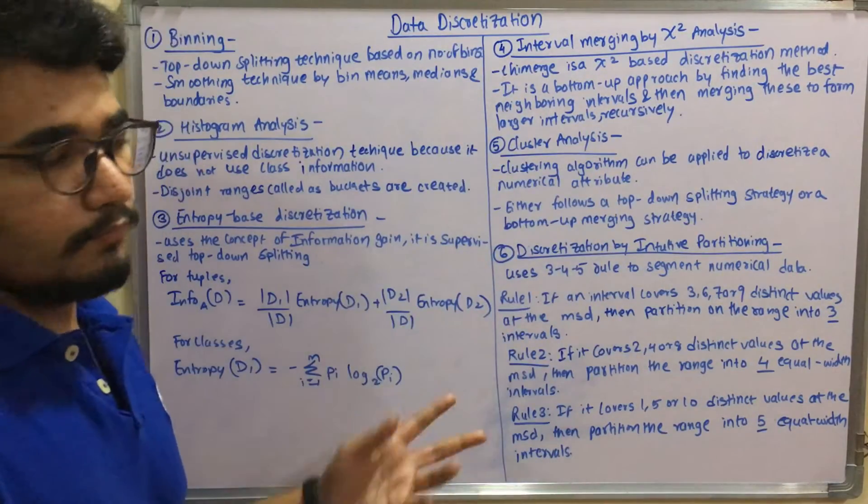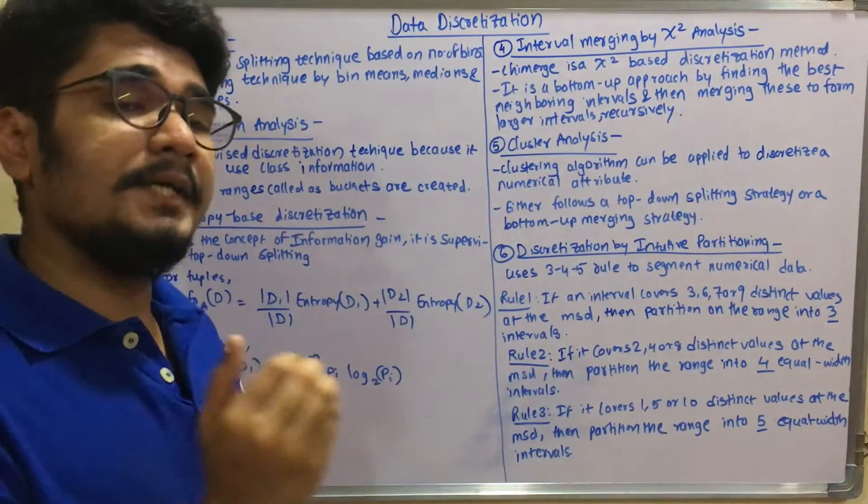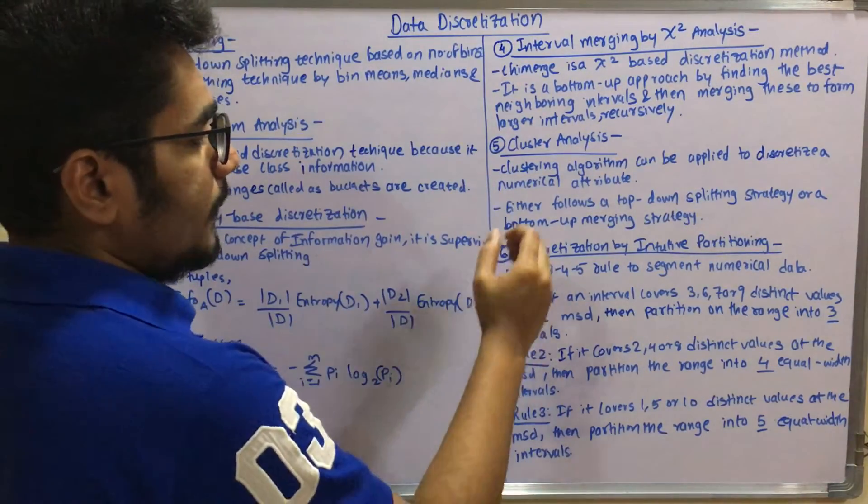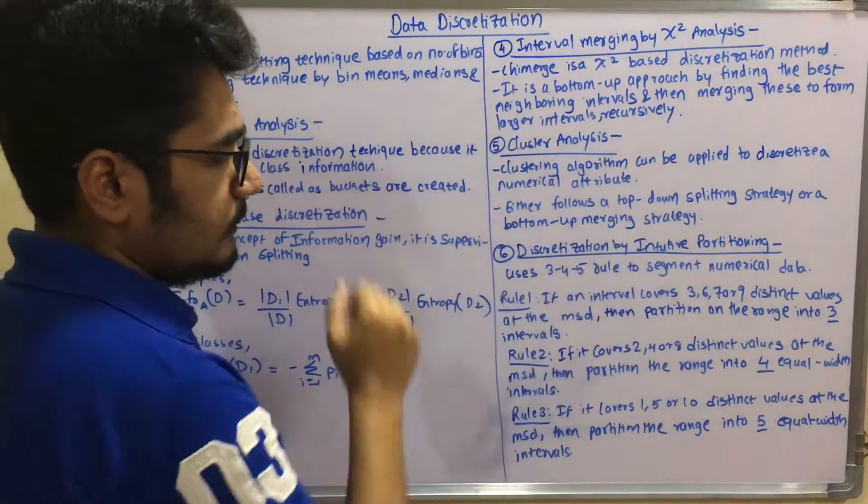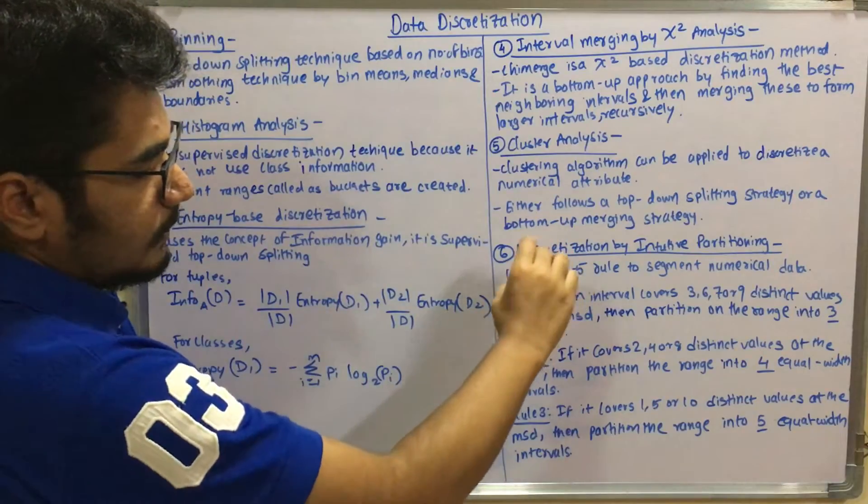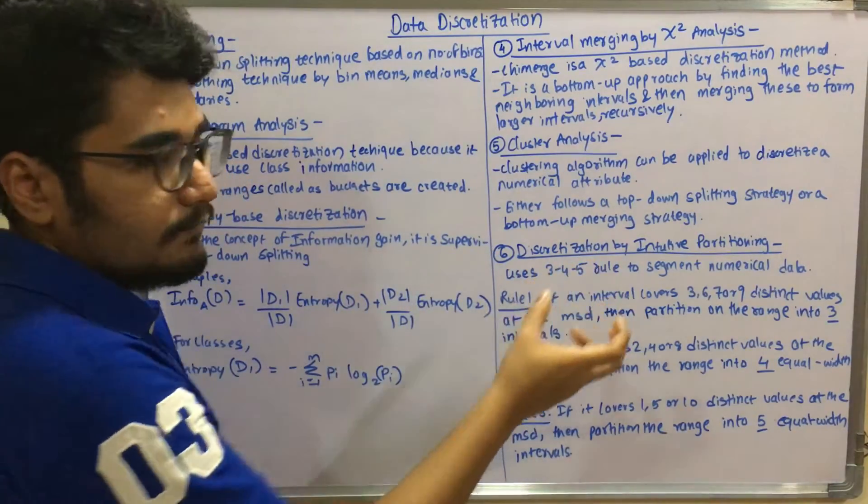Next we come to discretization by using intuitive partitioning. It basically uses the three-four-five rule to segment the numerical data. The partitioning goes this way: you have rule one, rule two, rule three. All these three rules are based on this three-four-five rule.